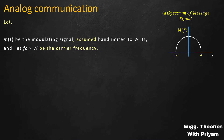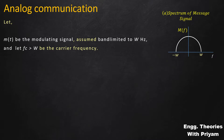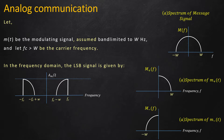In the frequency domain the lower sideband SSBSC modulated signal can be represented by spectral components of M+(t) and M-(t), which are capital M+(F) and capital M-(F). To represent the negative part of the lower sideband SSBSC modulated signal using the spectrum of M+(t), which is capital M+(F), we need to shift capital M+(F) by the frequency minus Fc. And to represent the positive part using the spectrum of M-(t), which is capital M-(F), we need to shift capital M-(F) by the frequency Fc.